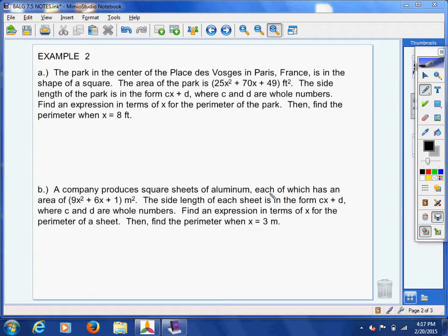Here's our situation. Let me read it to you. The park in the center of the Place des Vosges in Paris, France, is in the shape of a square. Stop right there, circle the word square.